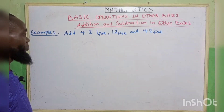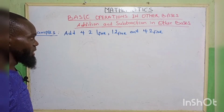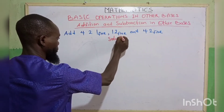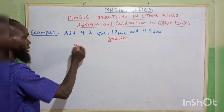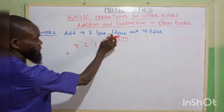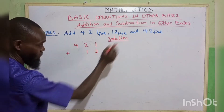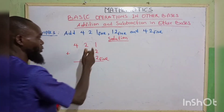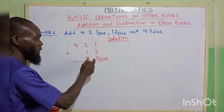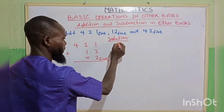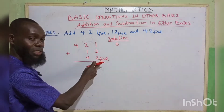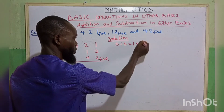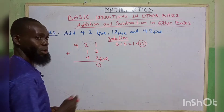Example 3: add 421 base 5, 12 base 5, and 42 base 5. We write 421 plus 12 (written as 012) plus 42, all aligned in base 5. Starting from the right: 1 plus 2 plus 2 gives 5. Since 5 equals the base, 5 divided by 5 gives 1, remainder 0. We write remainder 0 and carry 1.